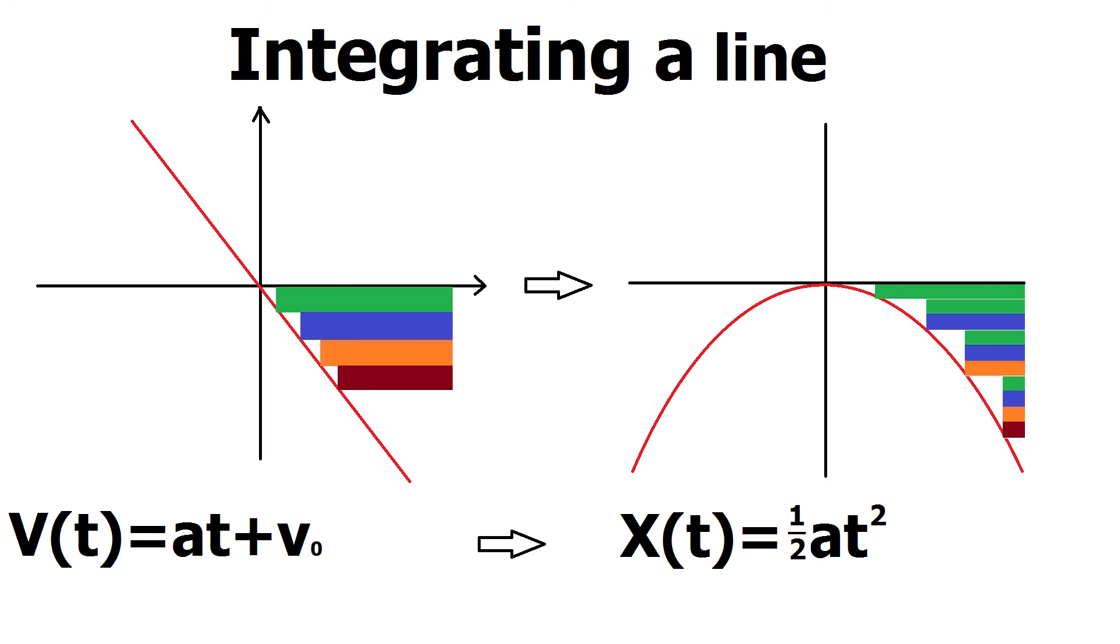Next, we tackle the constant term. From previous integration, we remembered that constant function gets a straight line as its integral, so we write v0 times t.